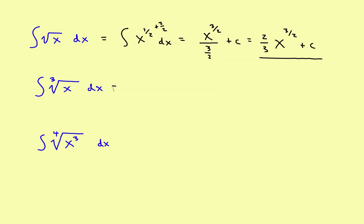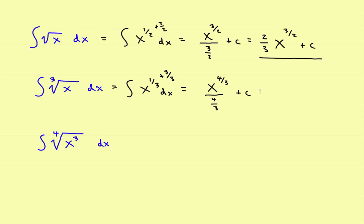Suppose you had a cube root. The cube root of x equals x to the 1 third power. When you increase the power by 1, rather than adding 1, add 3 thirds. So 1 third plus 3 thirds gives x to the 4 thirds, divided by 4 thirds, plus c. Then take the denominator, invert it, and that becomes 3 fourths of x to the 4 thirds power, plus c.